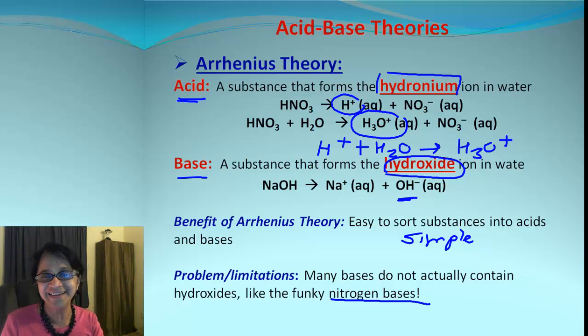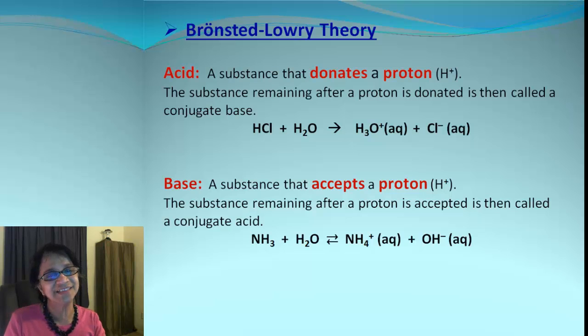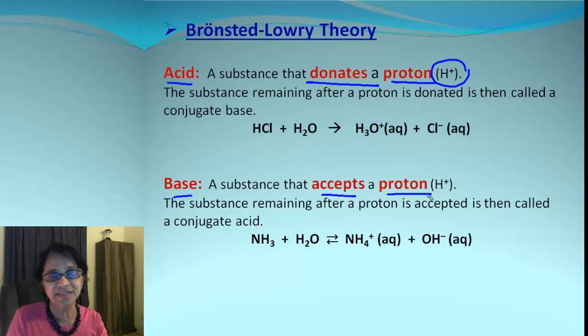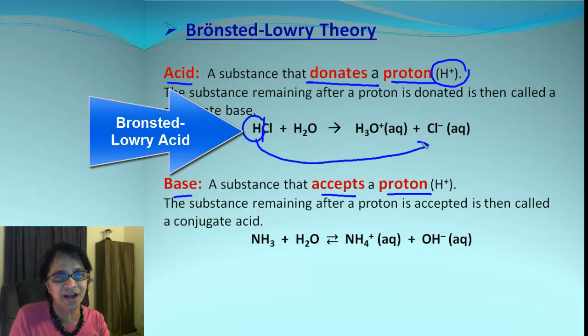So then we go to the next theory and that is Bronsted-Lowry theory. This theory makes use of proton, and actually a proton is nothing but hydrogen ion. So according to this theory, an acid is a substance which donates a proton and a base is the substance which is accepting a proton. So how does it work? HCl is hydrochloric acid as we all know. If that acid dissociates and that hydrogen ion or a proton is given out, then we end up having chloride ion remaining. That makes it an acid.